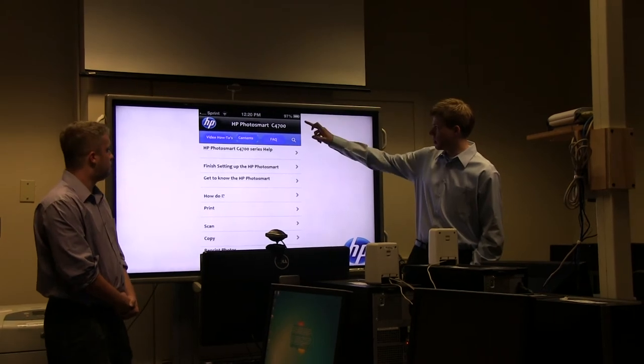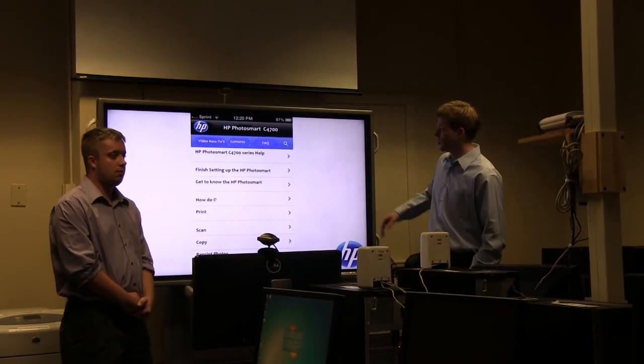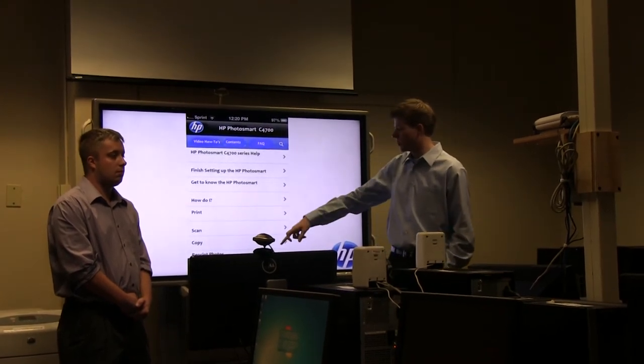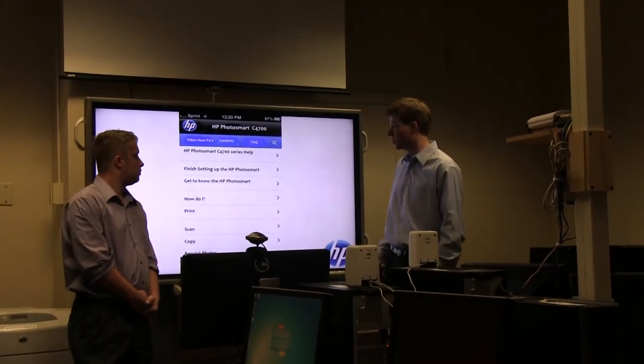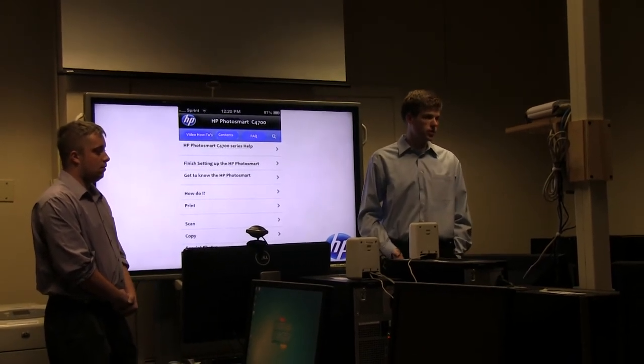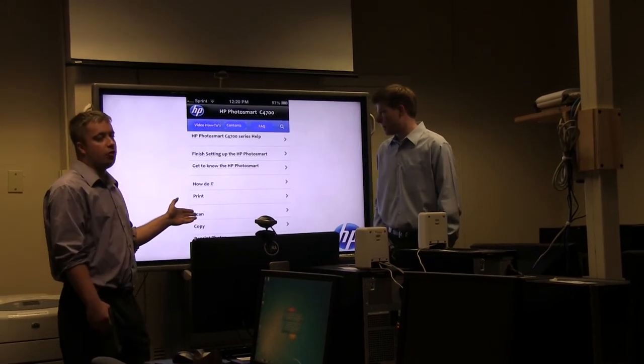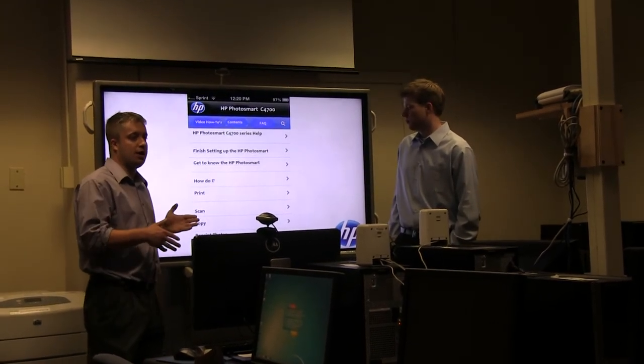This is sort of a mock-up of what we think a technical manual would look like after chunking. Right here is the printer that Paul had, which would be the Photosmart. If he clicks the content right here, these are all of the headings that he would have clicked to search through. It's sort of an easier way to look through the table of contents that he would have done on the desktop version.